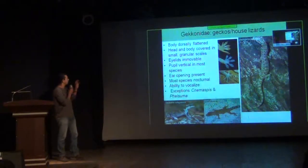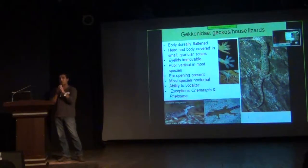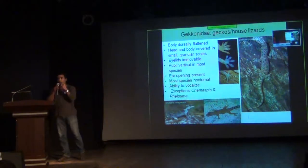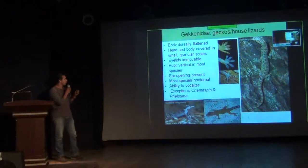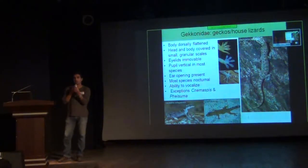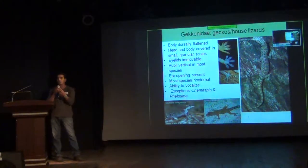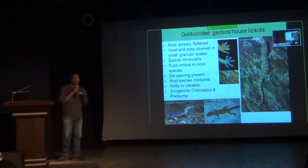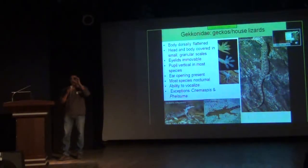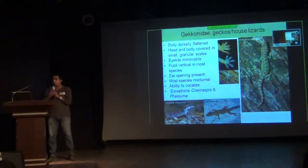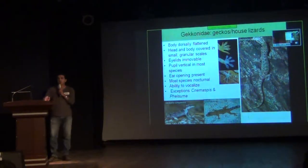Most geckos have the head and body covered in small granular scales — not like a snake, which has more regular plate-like head scales. Geckos have small granular scales, and the characters of these scales, like whether they are smooth or have tubercles, or how the tubercles are spaced, are all characters used in identification of individual species. Also, geckos have immovable eyelids — they cannot close the eye. This is one of the reasons you see geckos licking their eyes to clean them. On most geckos you can see the ear opening — there will be a little hole behind the eye.